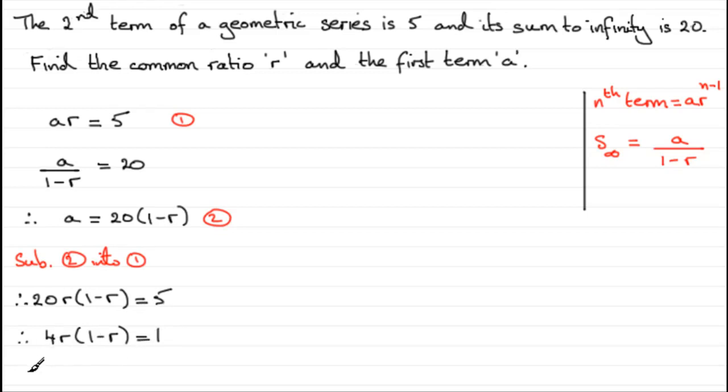Well now I'm going to expand this out and I end up with 4r minus 4r squared equals 1. And what I've got is a quadratic equation because I've got an r squared here. And to solve a quadratic equation I need to rearrange it and make it equal 0. So that's what we'll do next.